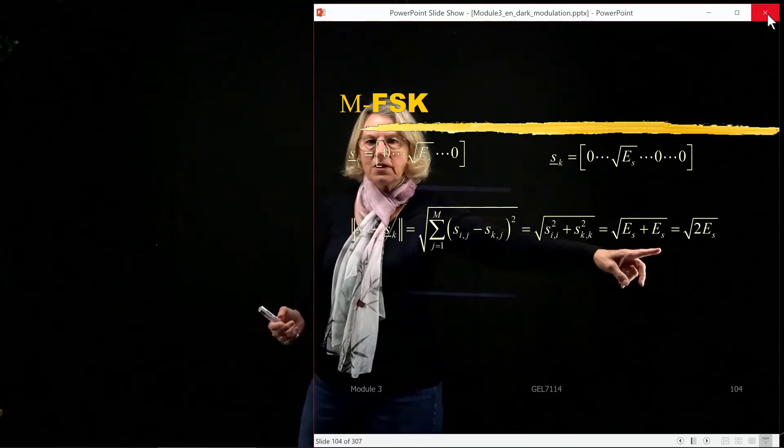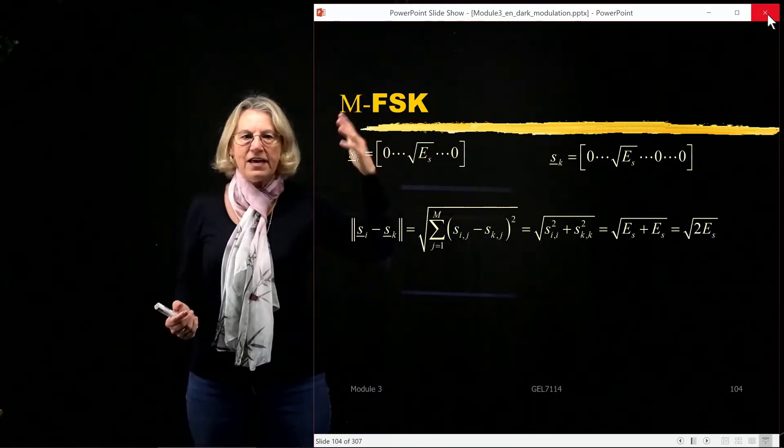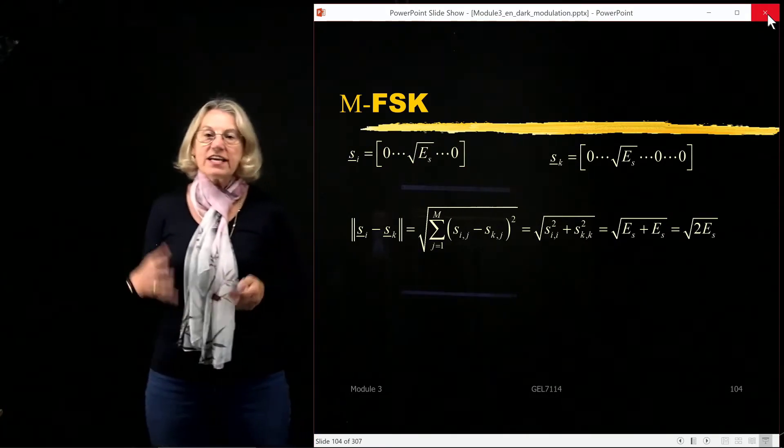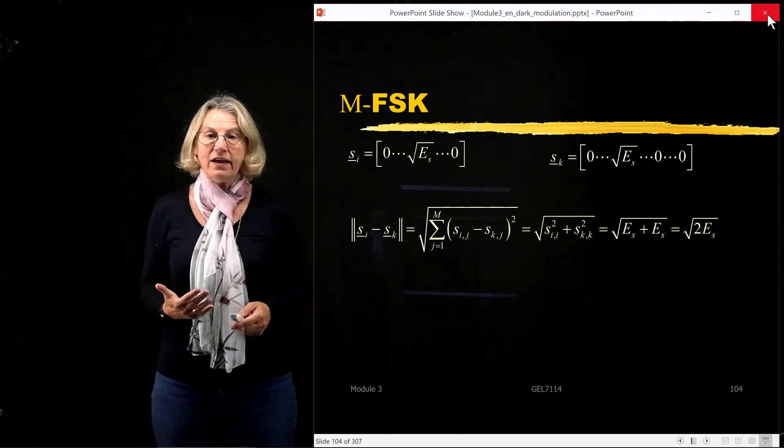So it's the square root of the energy squared gives the energy. So the energy of symbol i plus the energy of symbol k, which gives us two times the energy per symbol, the square root of that.